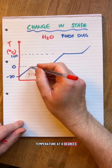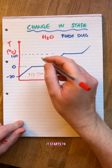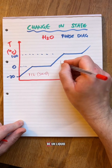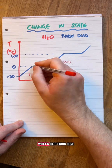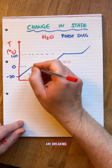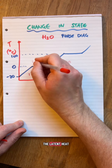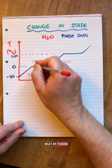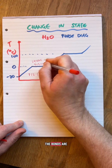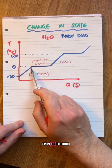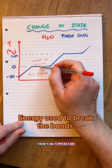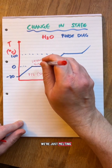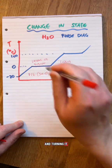At zero degrees it starts to melt. Doesn't all go straight away. Then the second phase is going to be liquid. What's happening here is the bonds are breaking. This is called the latent heat of fusion — hidden heat. The bonds are breaking, it's turning from ice to liquid. There's no temperature change. We're just changing the structure, just melting and turning it into water.